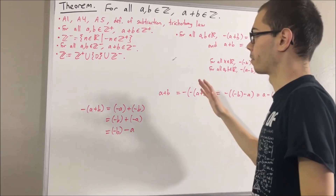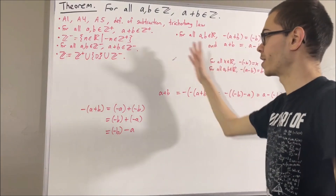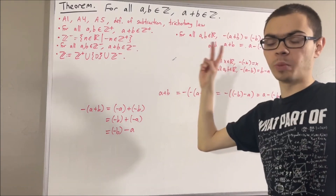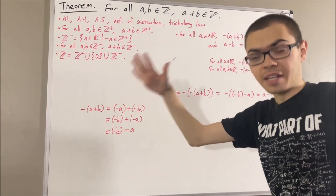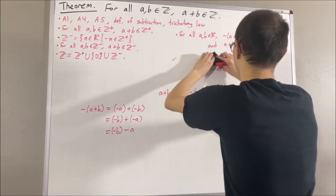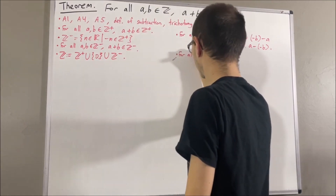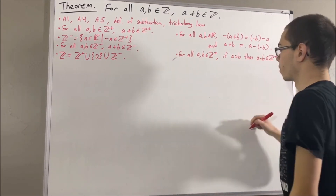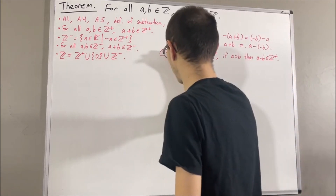There is one other preliminary result: given any two positive integers a and b, if a is greater than b, then a minus b is a positive integer. I'm going to call this preliminary result star.